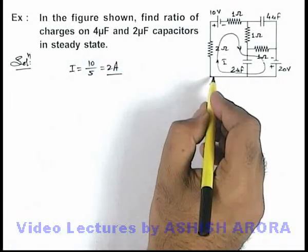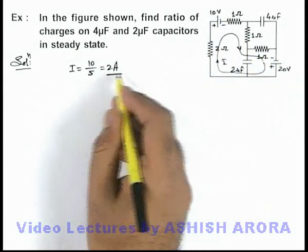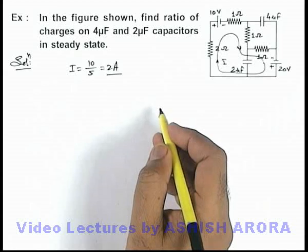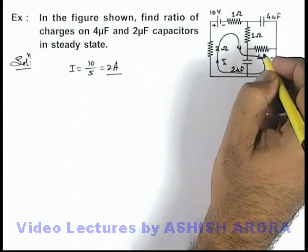This you can also calculate by applying kirchhoff's voltage law in the loop, you'll also get the current, this is the direct way how we have calculated. Now using this current we can find out the potential difference across these capacitors.